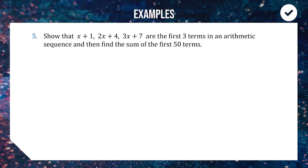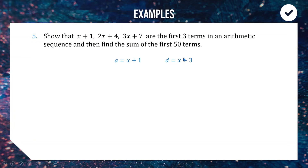Next, a more algebraic example: show that (x + 1), (2x + 4), (3x + 7) are the first three terms of an arithmetic sequence, then find the sum of the first 50 terms. Looking at the x-parts: x, 2x, 3x — each time we add x. Looking at the constants: 1, 4, 7 — each time we add 3. So there is a consistent difference of x + 3 between terms, confirming it's arithmetic.